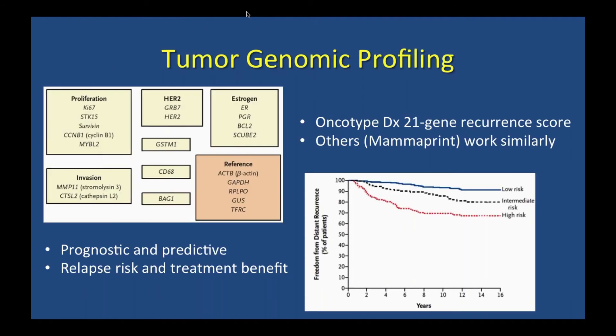Another example is Oncotype DX, which looks at 21 genes to stratify patients' risk into low, intermediate, and high, helping us make decisions about whether chemotherapy is beneficial or not.